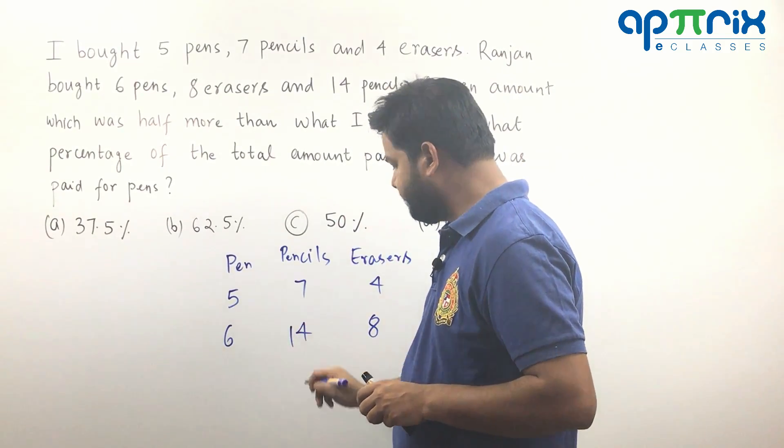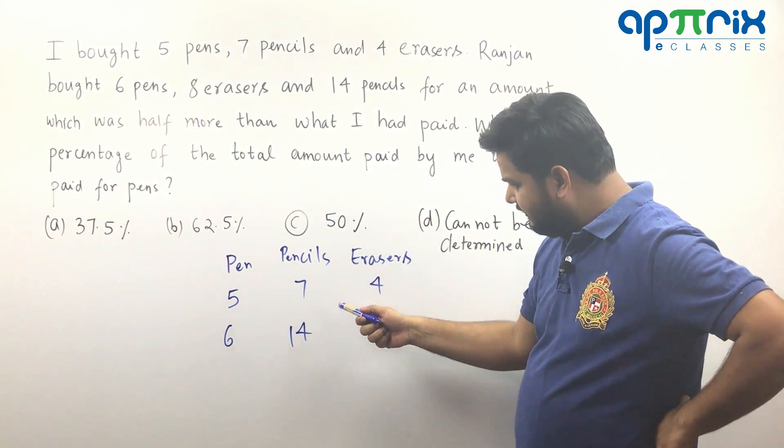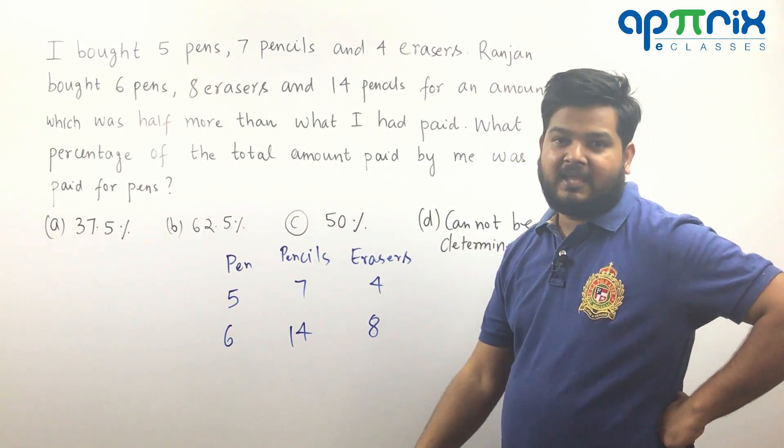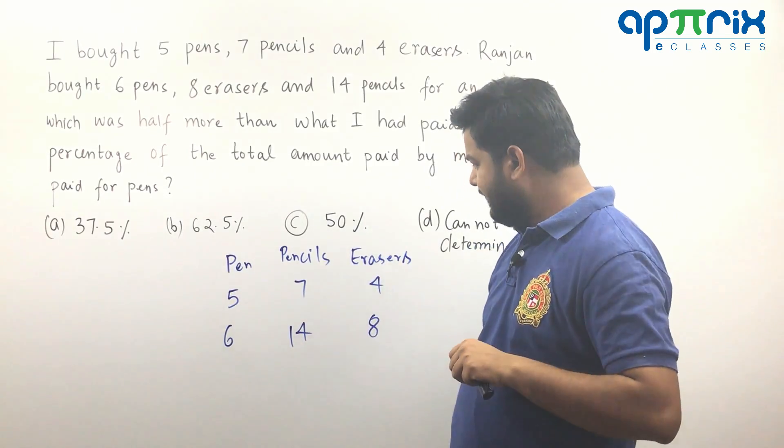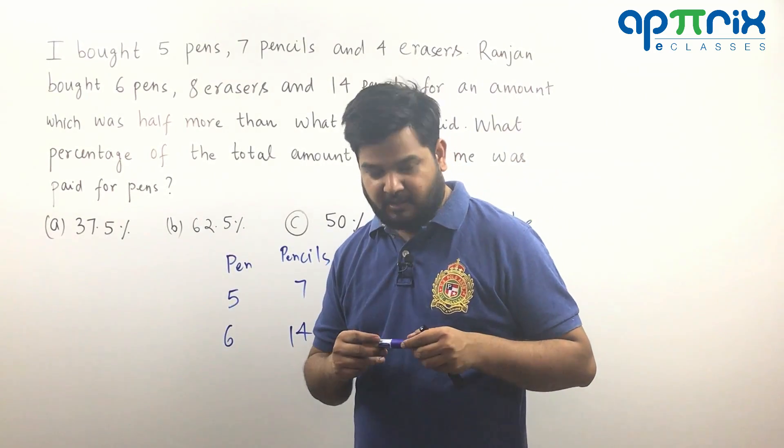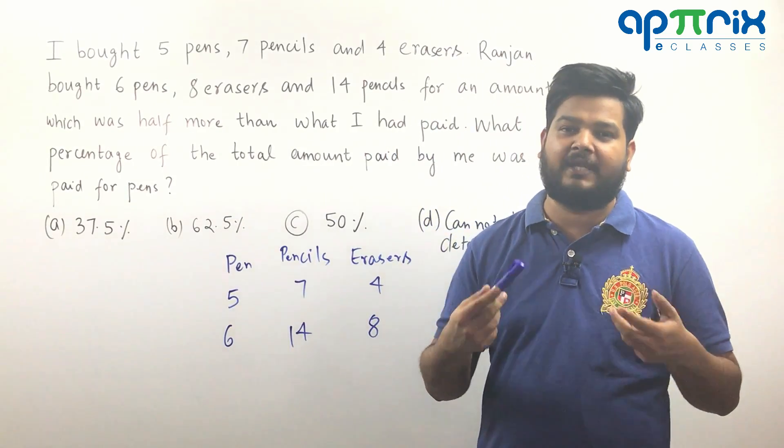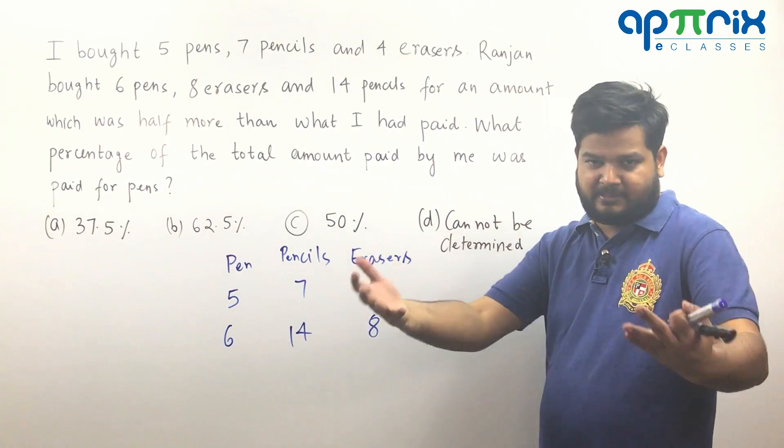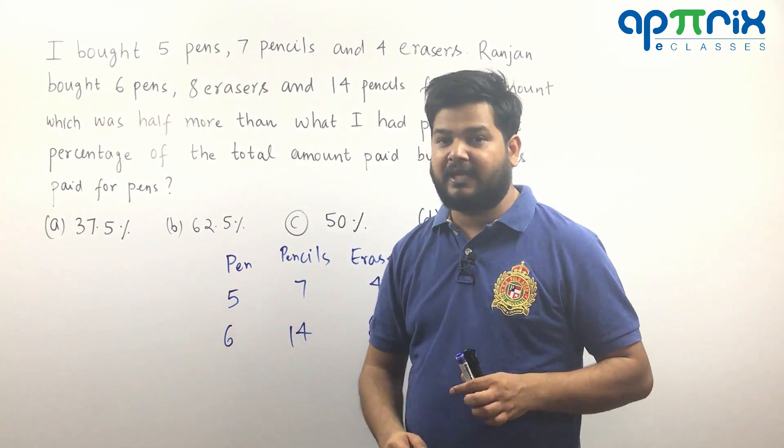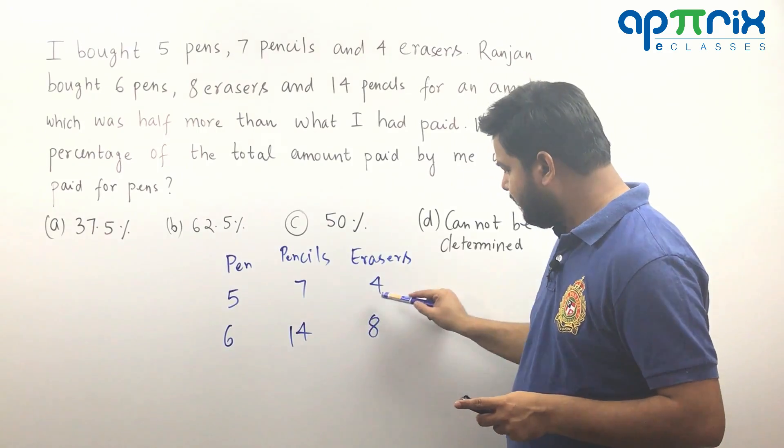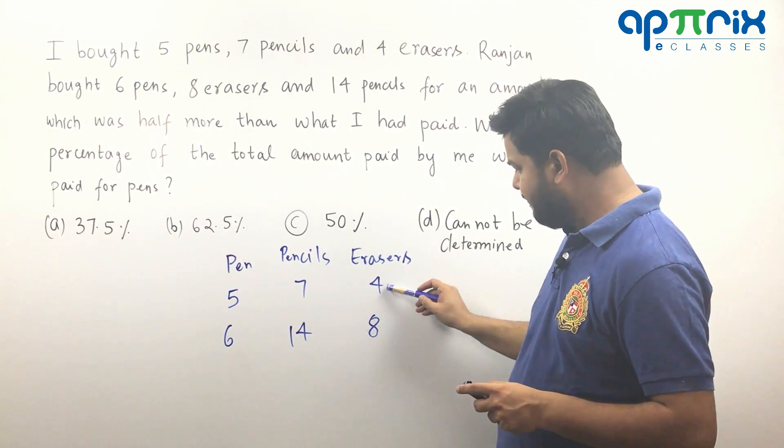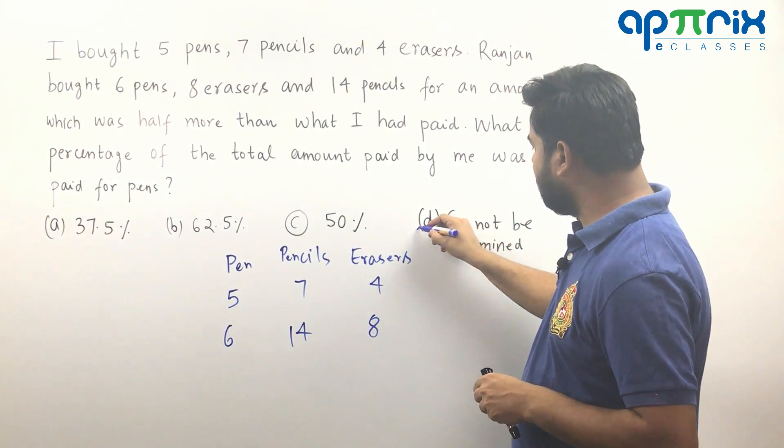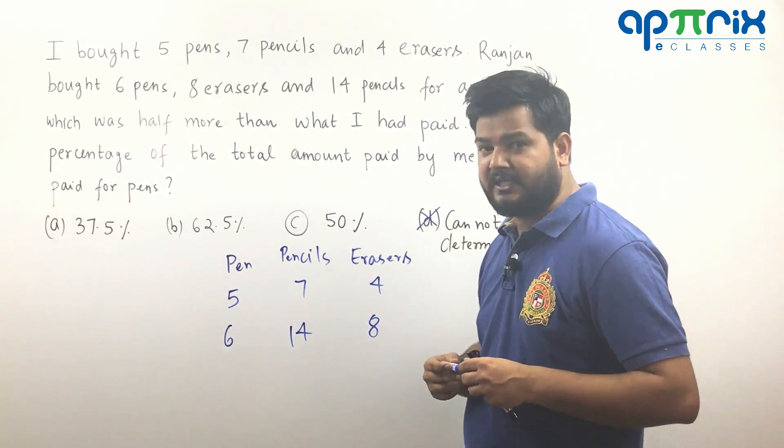Now if you clearly see here this is double of seven and this is double of four. And that is the reason why you can find a relationship. You can calculate the pen's cost price in terms of X if you assume that I spend X amount and therefore the percentage can be calculated because these two values are having same scale factors, 7 to 14, 4 to 8, same scale factor. So it is possible to solve. Therefore, cannot be determined should be the first answer that you are going to reject.